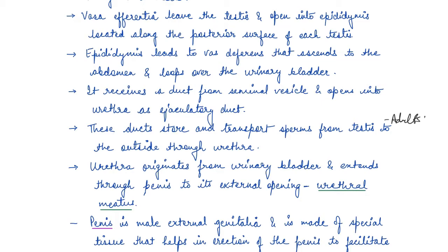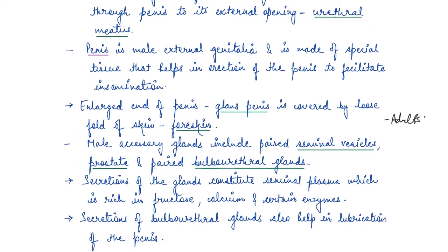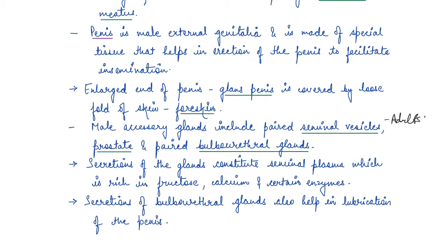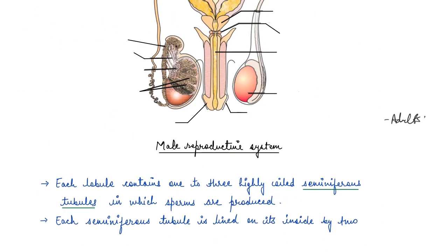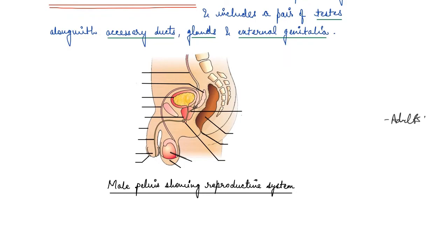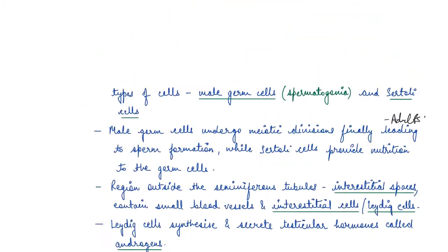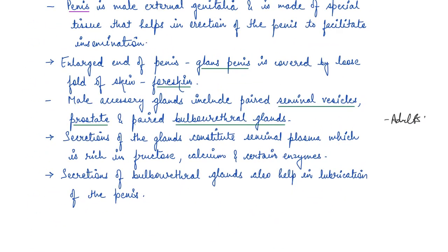So basically, the penis is the male external genitalia and is made of special tissue that helps in erection of the penis to facilitate insemination — to facilitate the transfer of sperm into the female body. Now there is an enlarged end of the penis, which is the glans penis. This enlarged portion of the penis, the glans penis, is covered by a loose fold of skin, which is known as the foreskin.